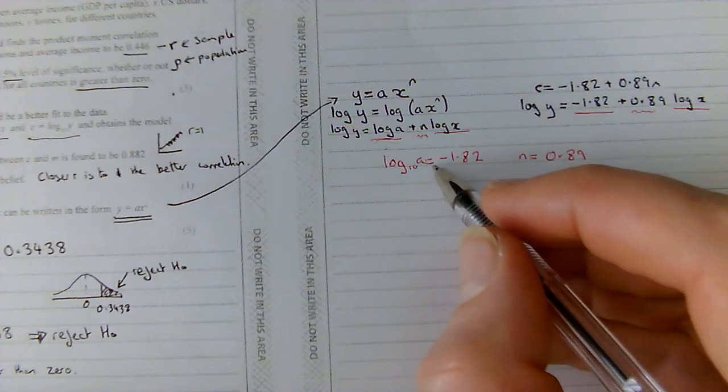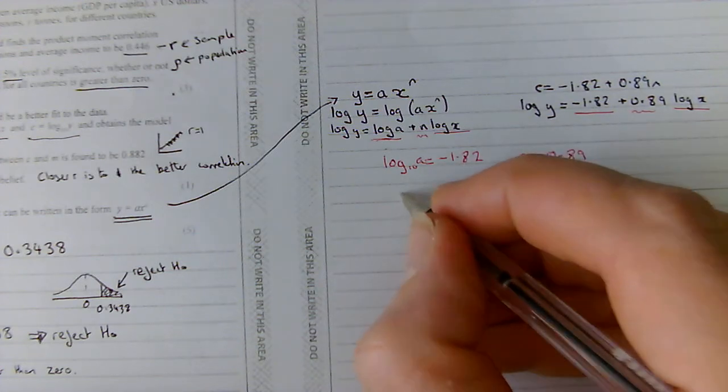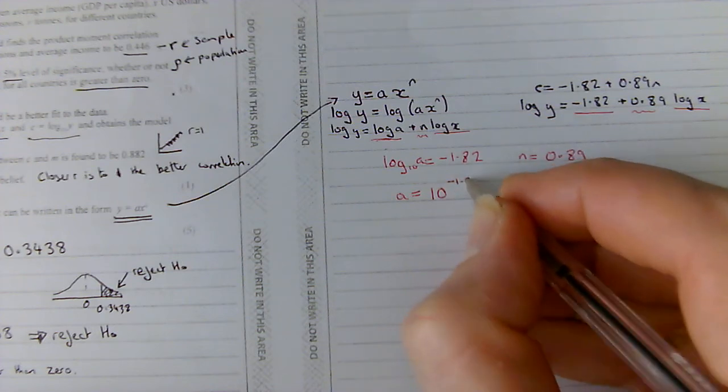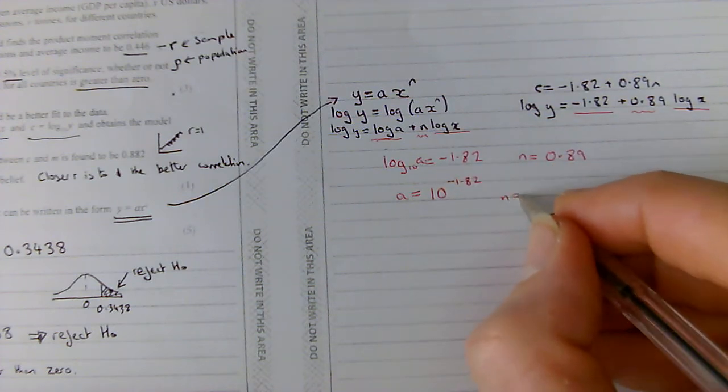So, I know that log base 10 of A is minus 1.82. So, A is going to be 10 to the power of negative 1.82. And I know N equals 0.89.